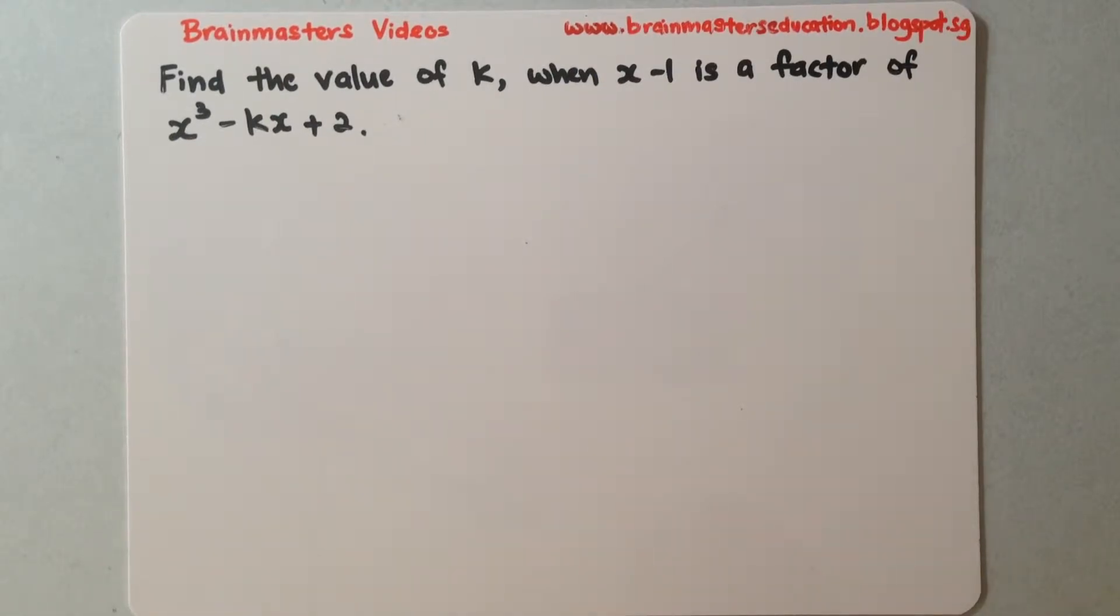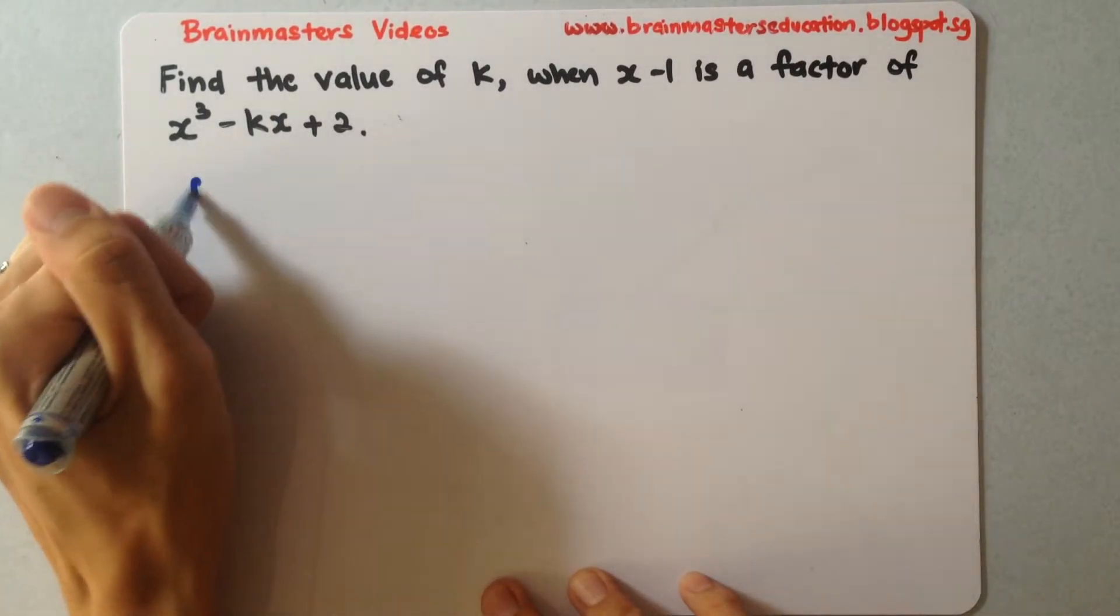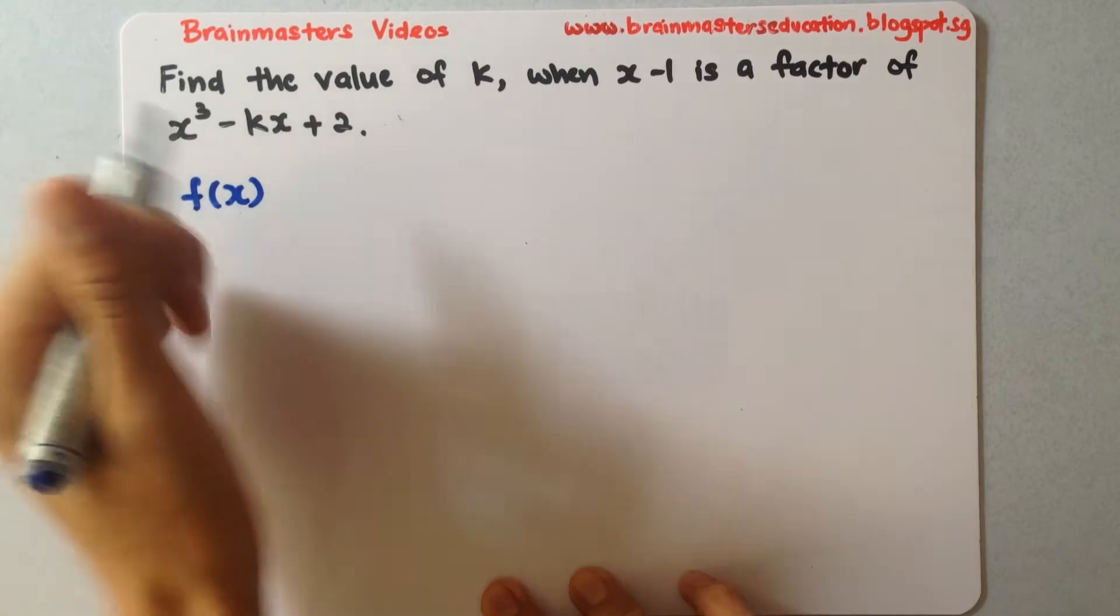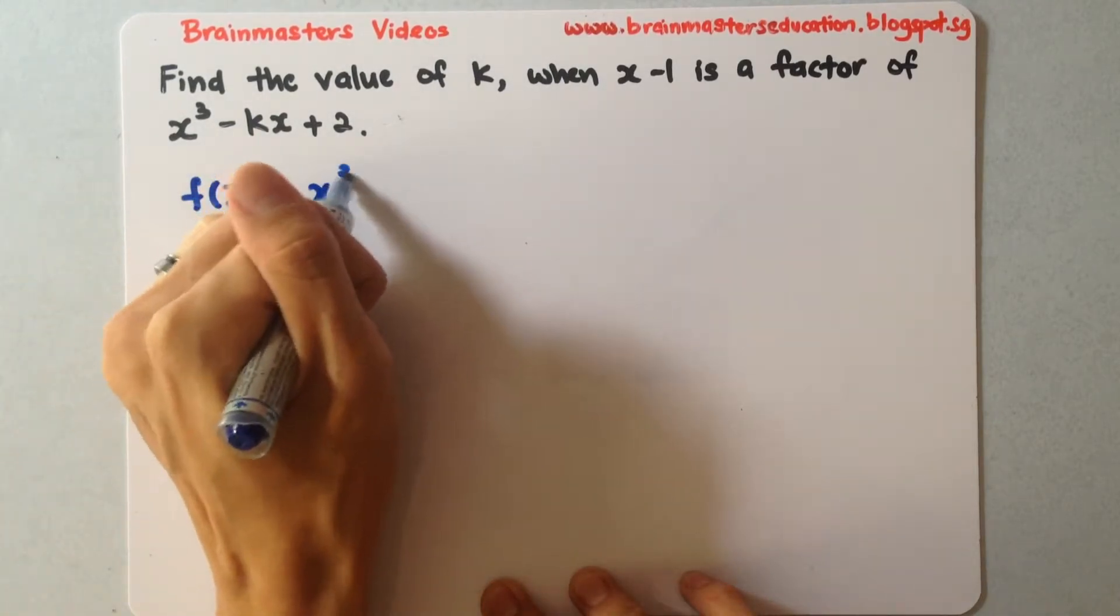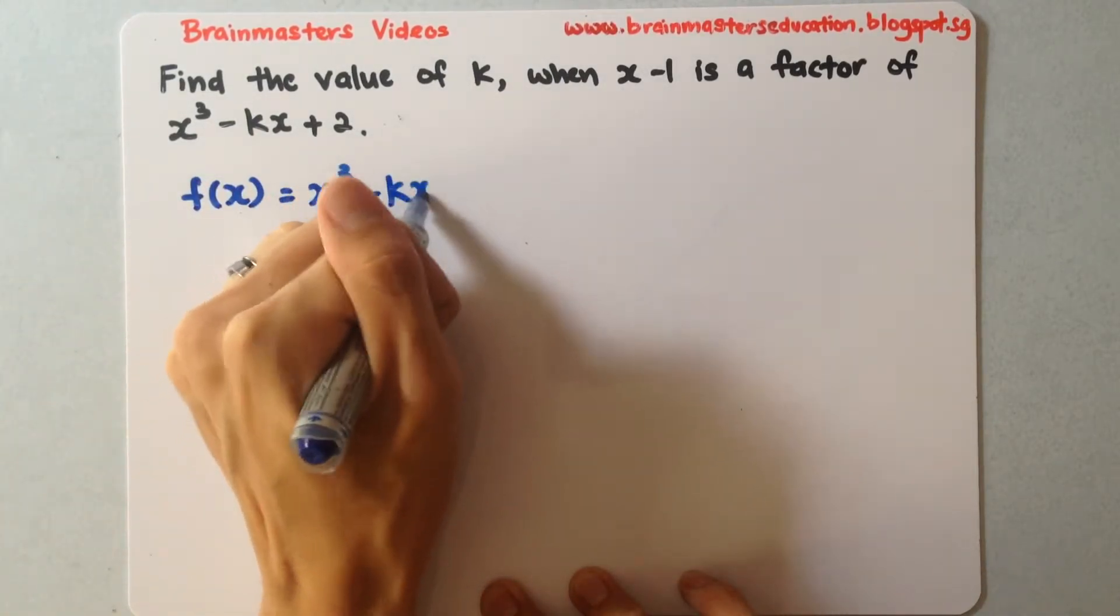Find the value of k when x minus 1 is a factor of x cubed minus kx plus 2. So this is the equation. So f(x), we represent it by f(x) equals to x cubed minus kx plus 2.